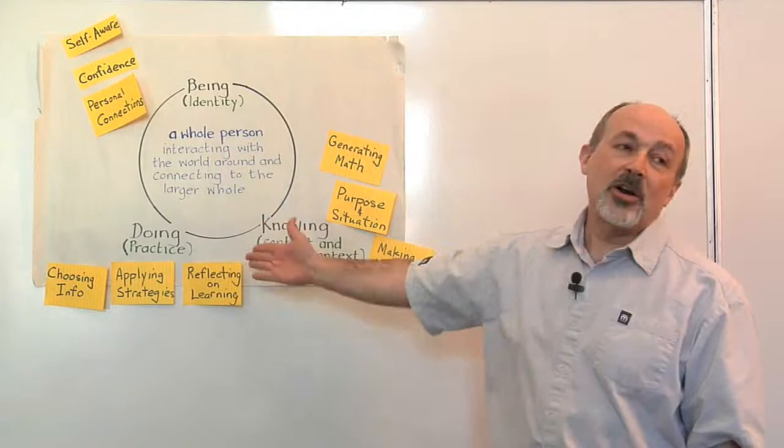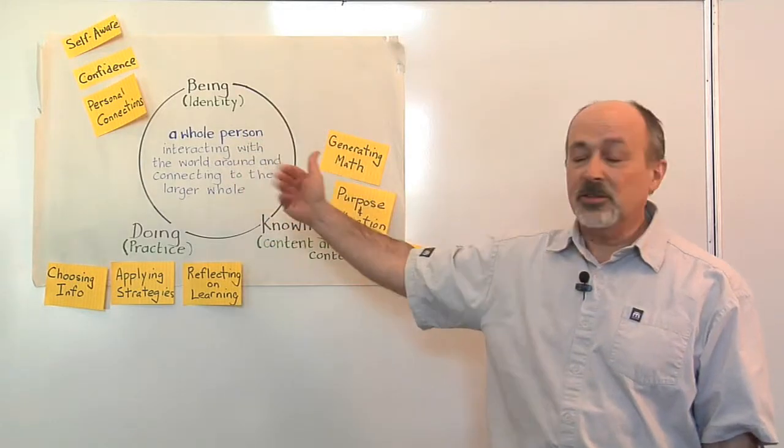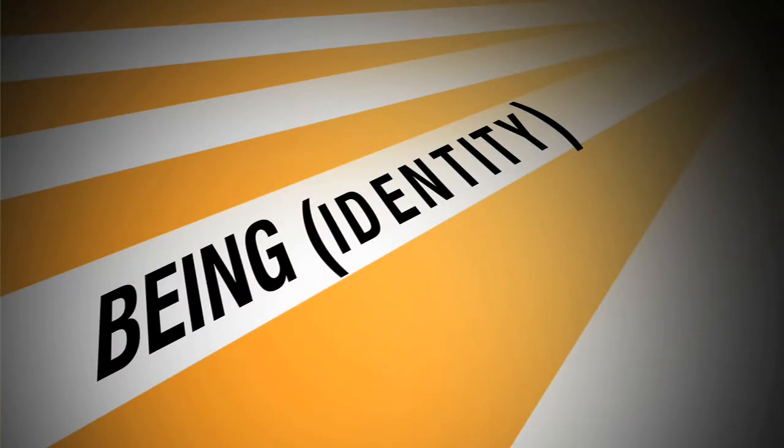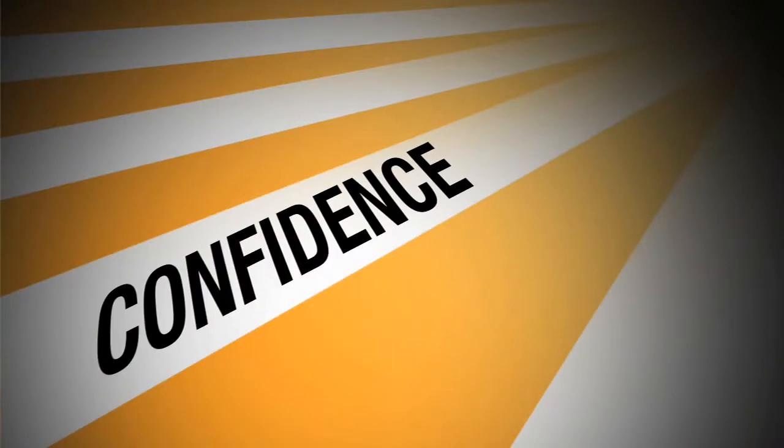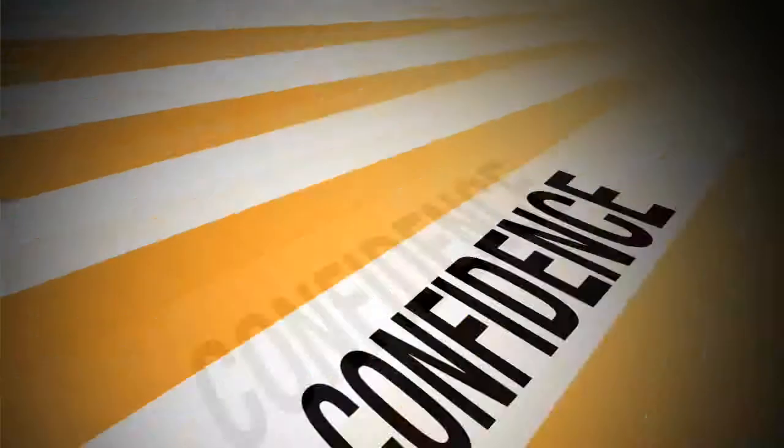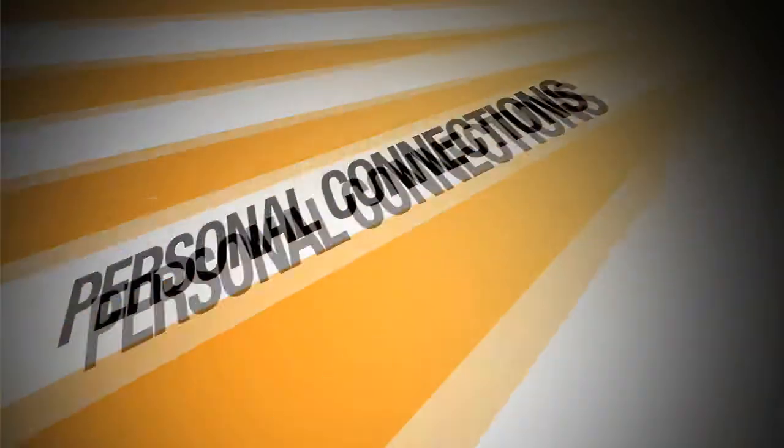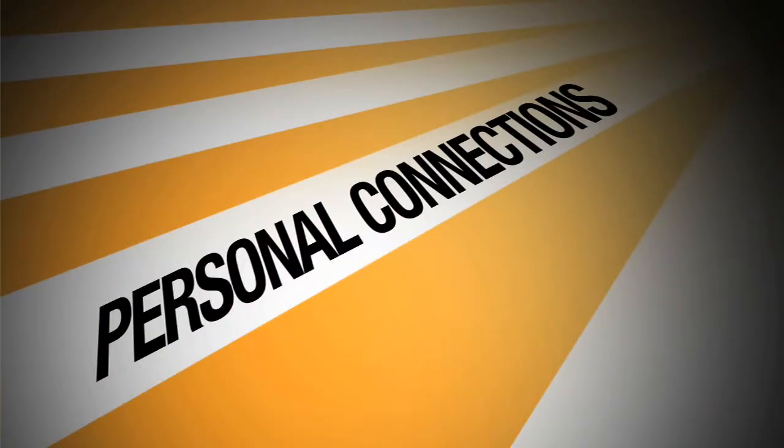In this model we have here, that's the core, and around this core are these three aspects of learning. The first one we call being. Being is what matters to you. It's about gaining confidence in doing mathematics. It's about becoming self-aware of yourself as a learner in doing math, and it's also about making personal connections through mathematics with people and things around you.